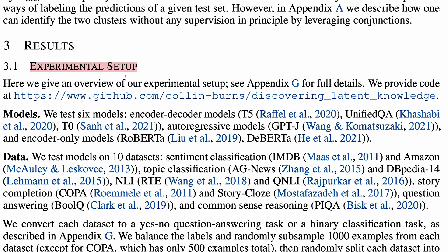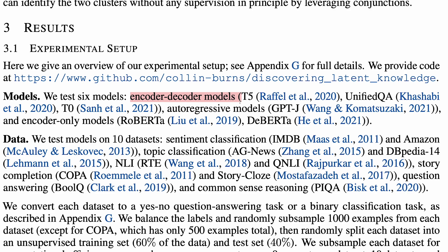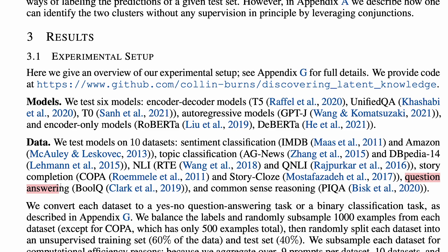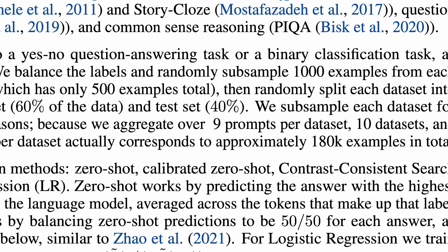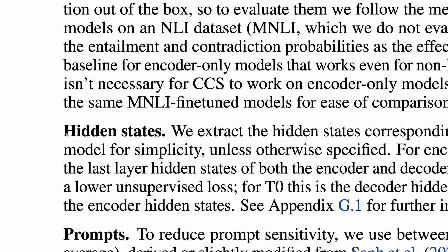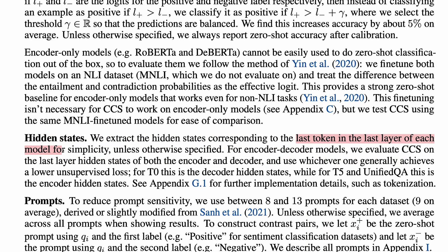Let's look at the experimental setup. The authors study encoder-decoder models, autoregressive models, and encoder-only models. Models are tested on 10 datasets, spanning sentiment classification, topic classification, natural language inference, story completion, question answering, and common sense reasoning. The baselines compared to are zero shot, calibrated zero shot, which works by balancing zero shot predictions to be 50-50 for each answer, and supervised logistic regression. The hidden states used as features are the last token in the last layer of each model.